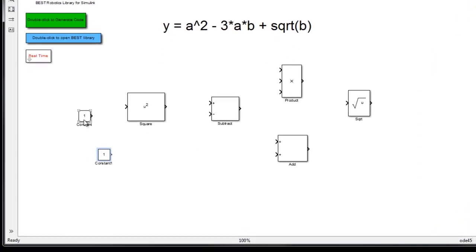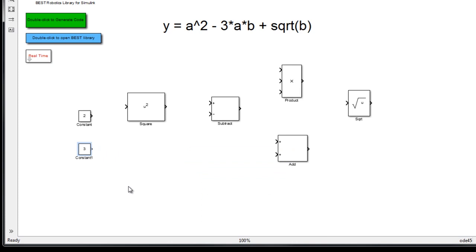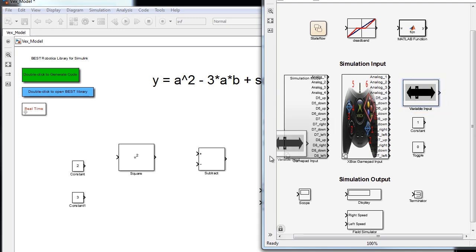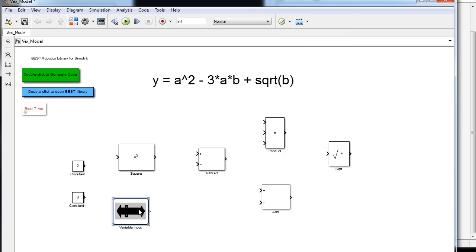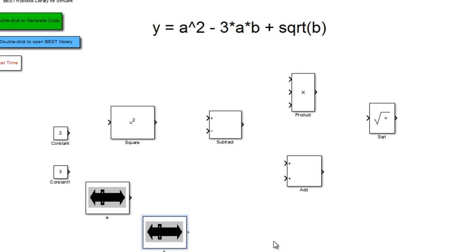For the variables A and B, we cannot use constant blocks since their values will be varying. Instead, we use something called the variable input block, which is also in the utilities library. Let's drag and drop this block into the window, then create a copy since we have two variables. Let's rename these blocks as A and B. We have now added blocks for our constant values and also for our variables A and B.